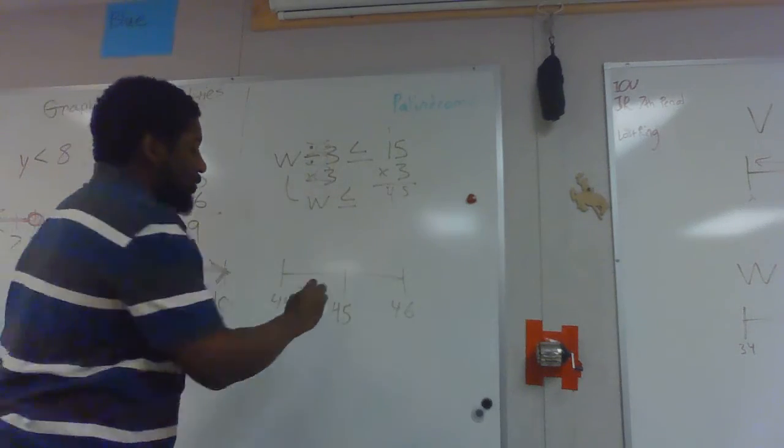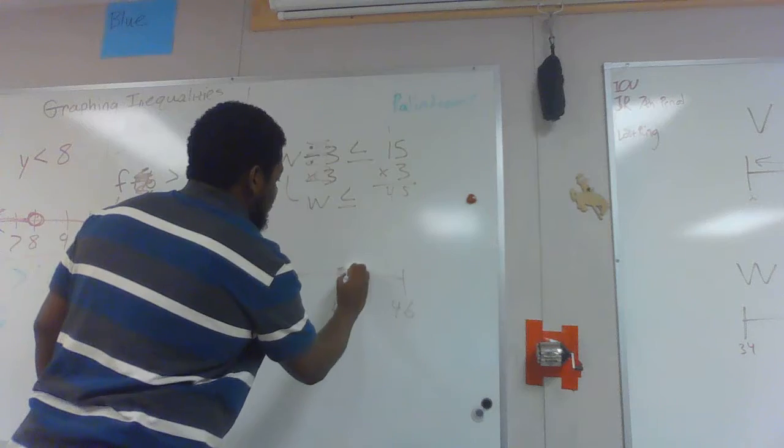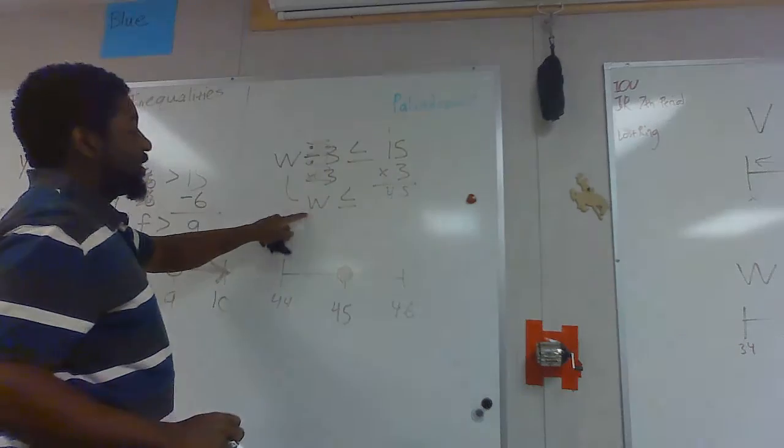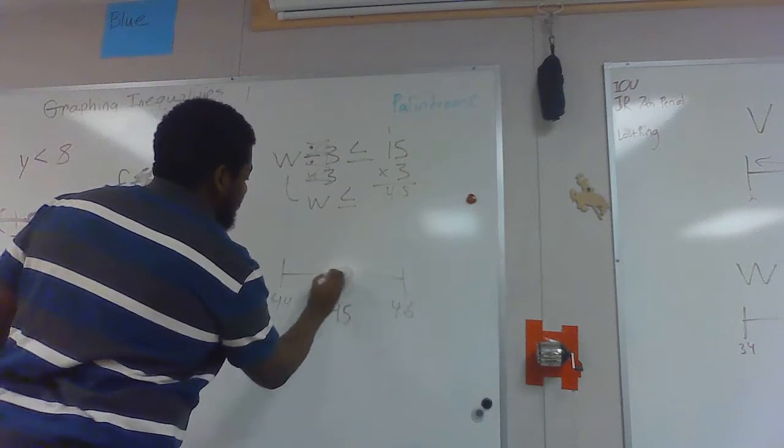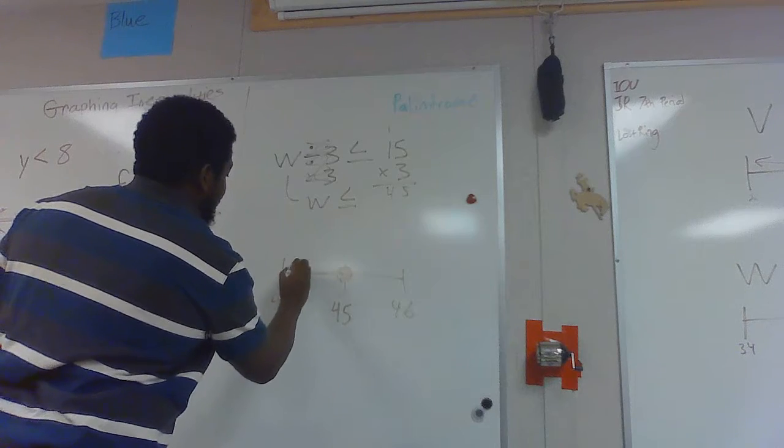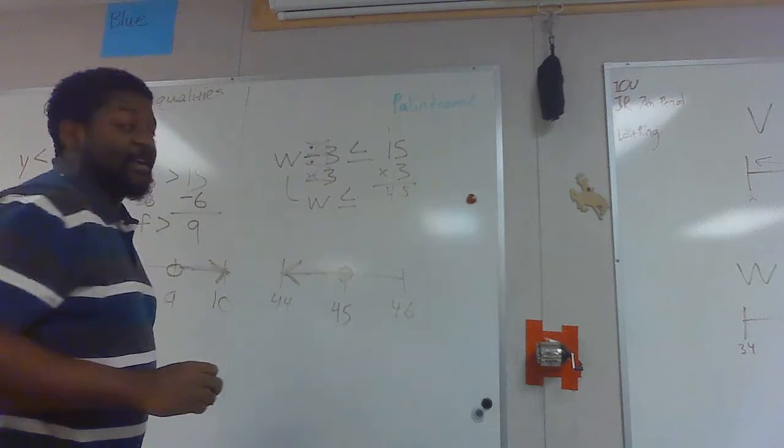Since it's less than or equal to, I'm going to have a closed dot, and since my answer is less, my arrow is going to the left at everything that is less than 45.